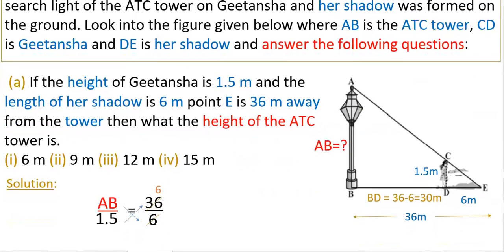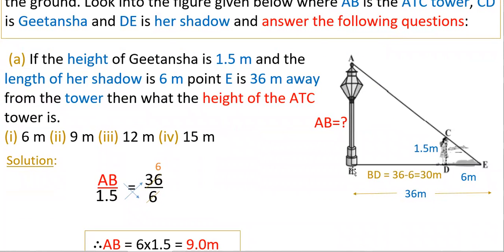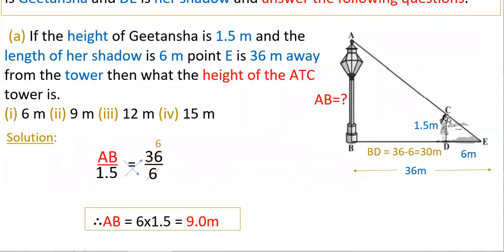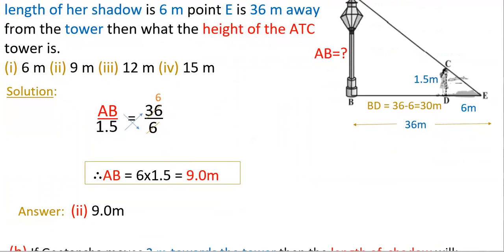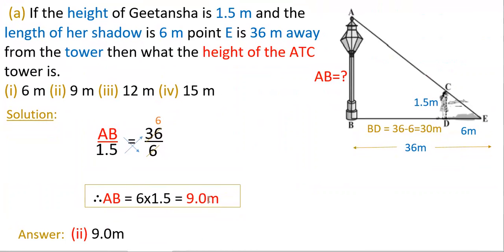The shadow length DE is 6 meters and the distance from the tower to point E is 36 meters. So BD equals 36 minus 6, that is 30 meters. There are two triangles — one big and one small — and these two triangles are similar, so corresponding side ratios are equal. AB by 1.5 equals BE by DE, that is 36 by 6. Cross multiplying: 6 into 1.5 equals 9 meters. So AB equals 9 meters, and option 2 is correct.